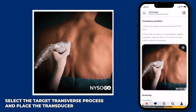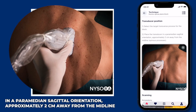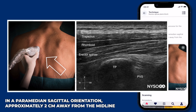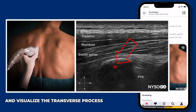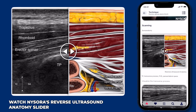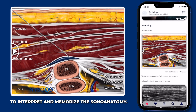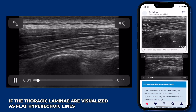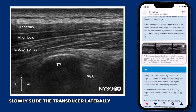Step one: select the target transverse process and place the transducer in a parmedian sagittal orientation, approximately 2 centimeters away from the midline, and visualize the transverse process. Watch Nysora's reverse ultrasound anatomy slider to interpret and memorize the sonoanatomy. If the thoracic laminae are visualized as flat hyperechoic lines, slowly slide the transducer laterally.